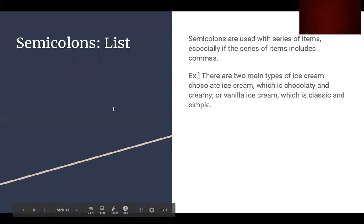Now, semicolons, like colons, can also be used in a list. Semicolons are used with a series of items, especially if the series of items includes commas. The semicolons separate each item in the series. For example, there are two main flavors of ice cream. We have chocolate ice cream, comma, which is chocolatey and creamy. Now, we have a semicolon to separate it from the other type. Or vanilla ice cream, comma, which is classic and simple. As we can see, the semicolon separates the series of items.